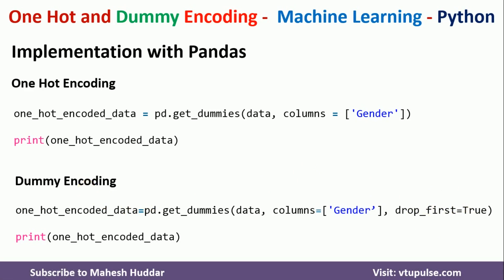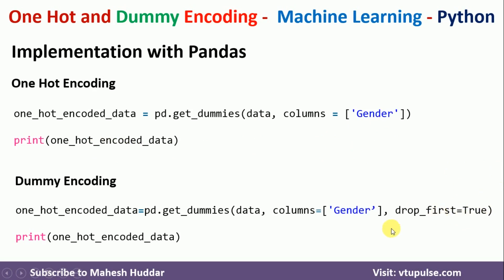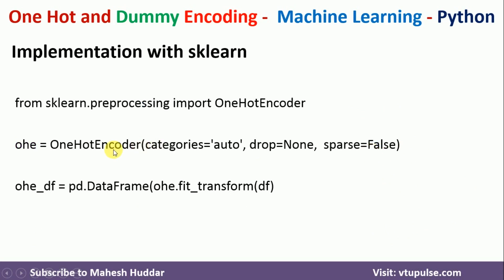Now for implementing one-hot and dummy encoding using sklearn: first import `OneHotEncoder` from `sklearn.preprocessing`. Create an object `ohe = OneHotEncoder()`, then call `ohe.fit_transform(df)` to get the one-hot encoded data frame. To get dummy encoded data, pass the extra attribute `drop='first'` to the OneHotEncoder, and you will get the dummy encoded output.